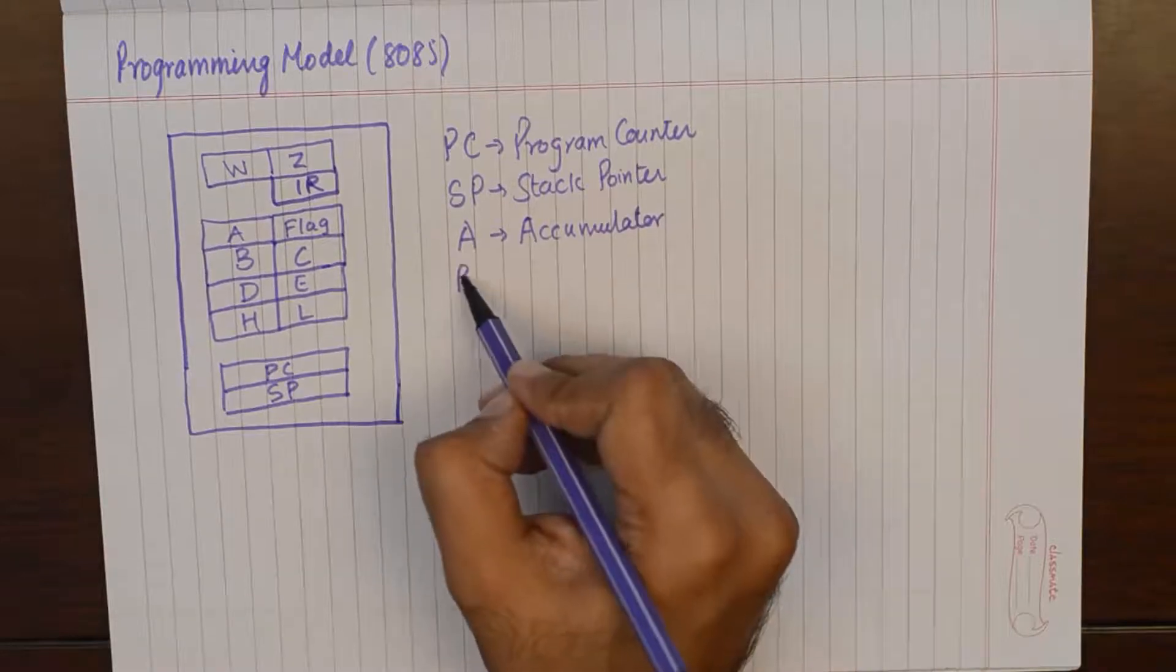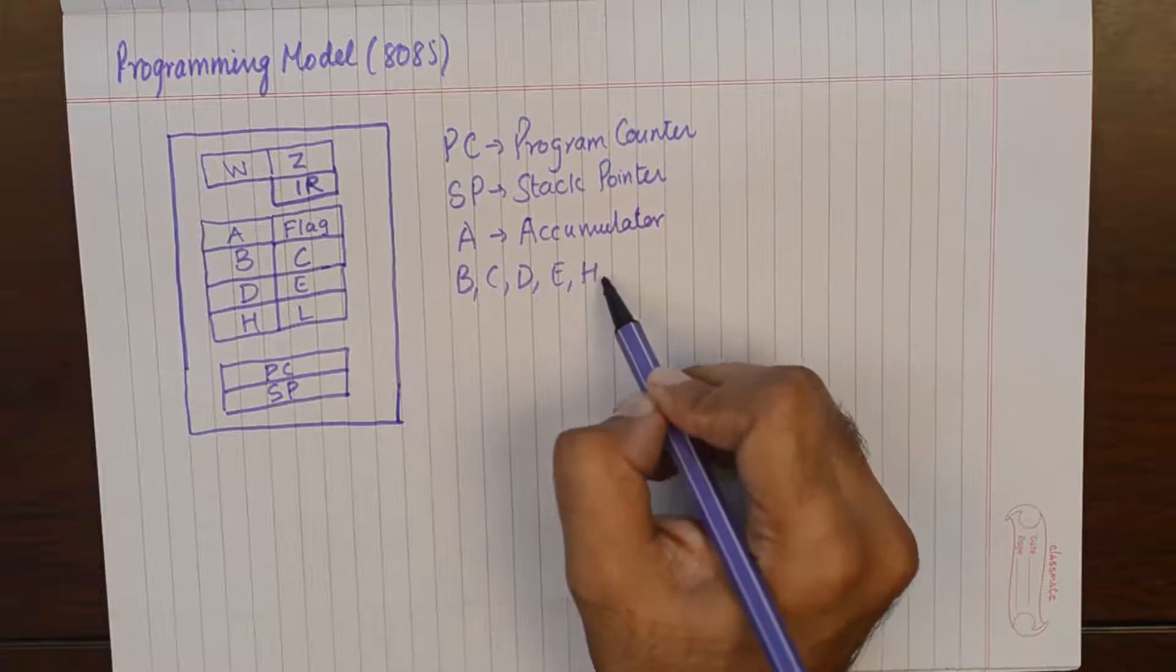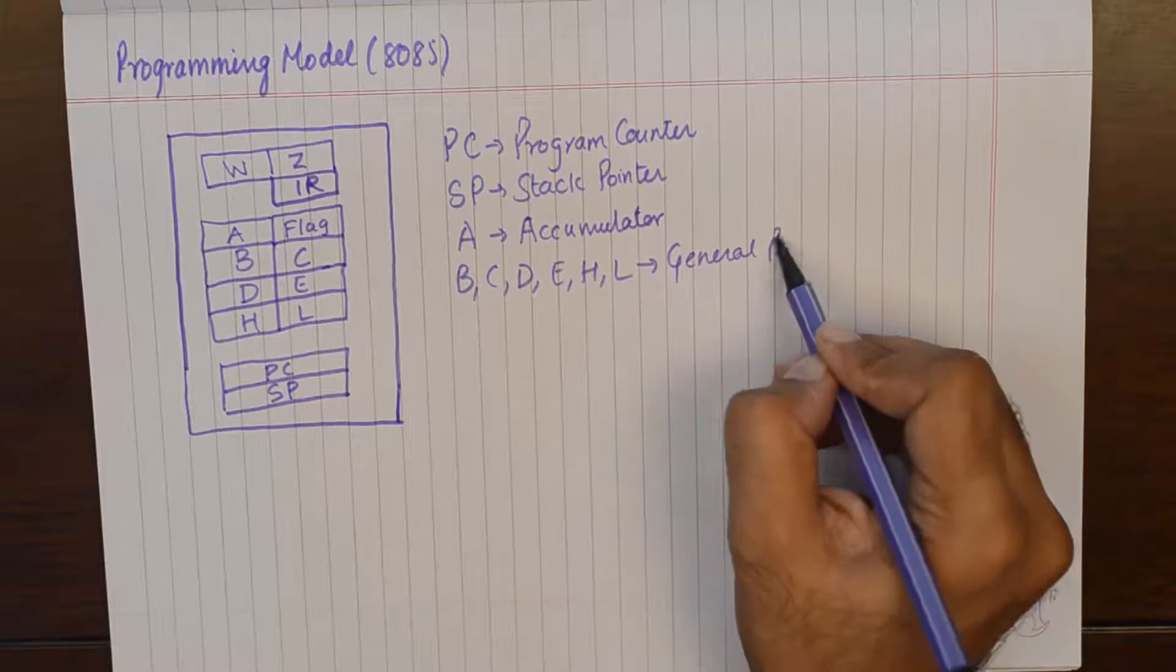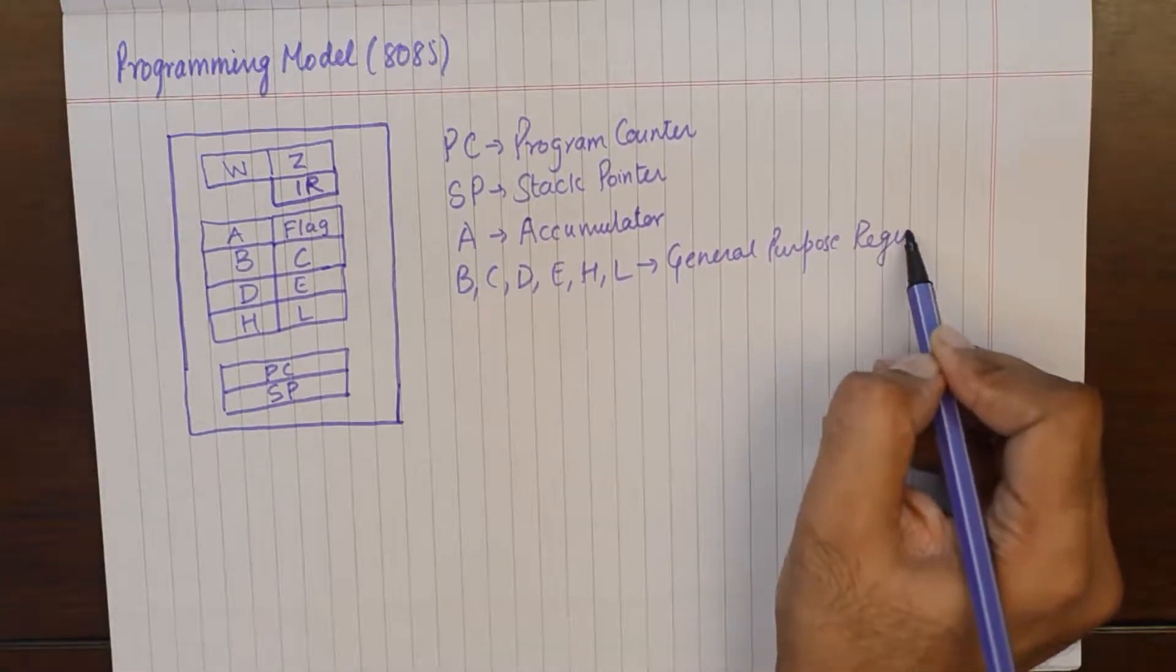B, C, D, E, H and L are General Purpose Registers.